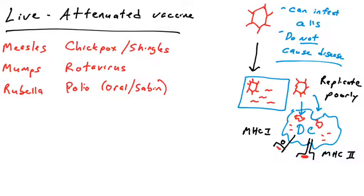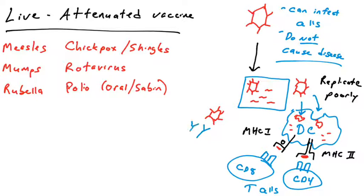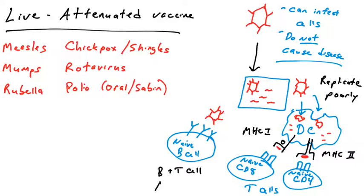Cells like dendritic cells and other professional antigen-presenting cells will either become infected by this virus or take it in via endocytosis or phagocytosis. Since this is a real infection, the pathogen proteins are going to be presented on MHC class I and MHC class II molecules. That allows us to have an excellent response by the adaptive immune system, which is what we're looking for.